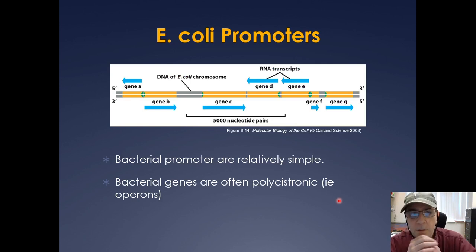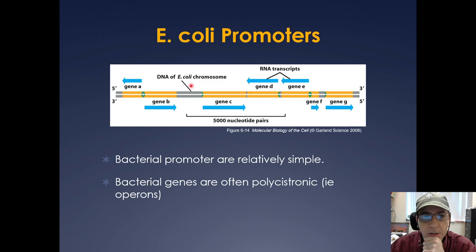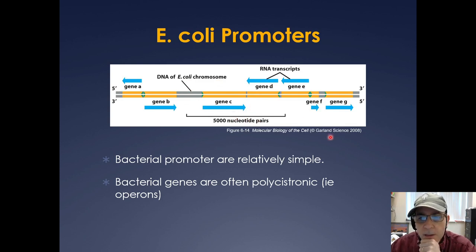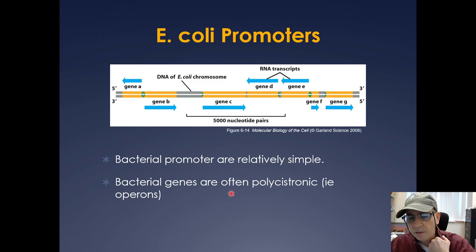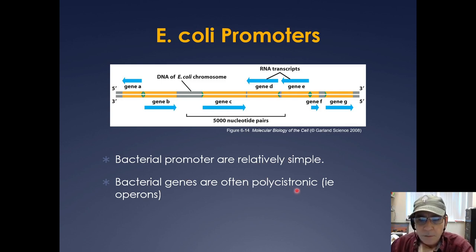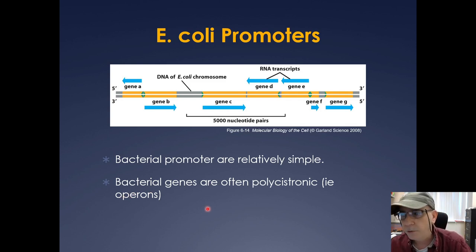Here's an example of some E. coli promoters. You have these different genes and RNA transcripts can be produced off either strand of the E. coli DNA. The bacterial promoters are relatively simple. One other thing: bacterial genes are often polycistronic, meaning they have many genes on them and are expressed as operons, which can give rise to many different proteins.